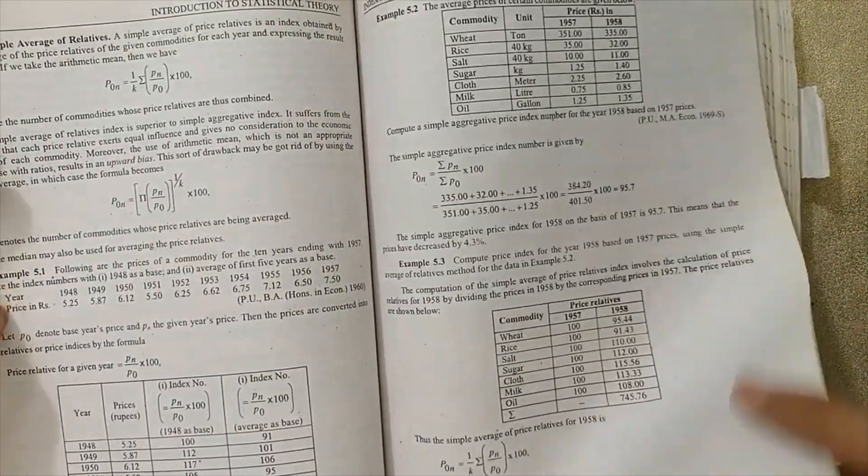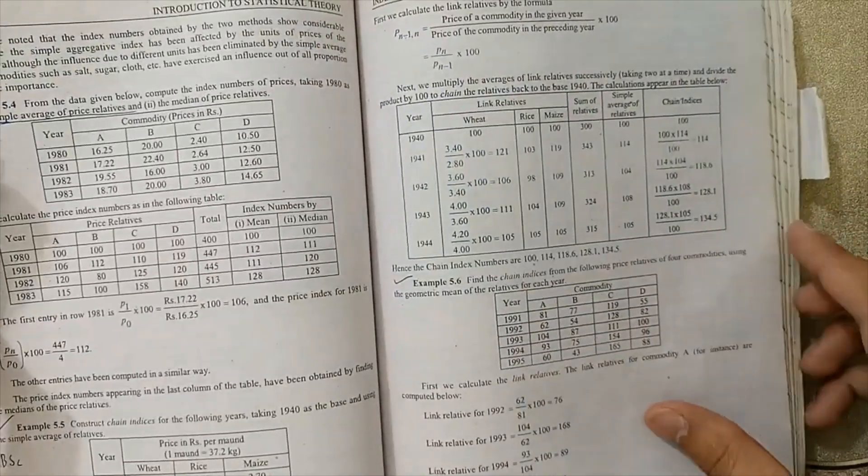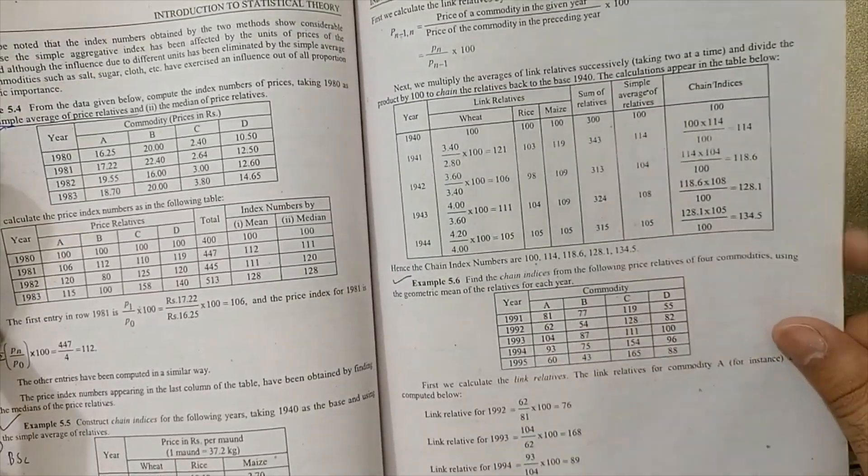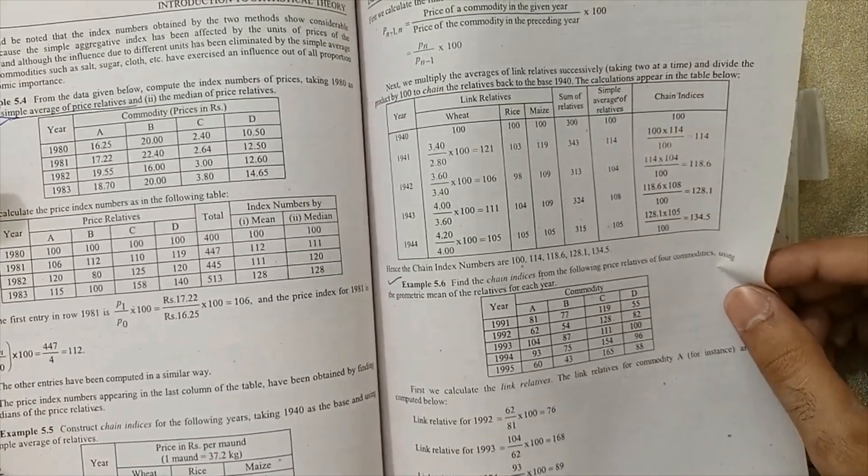And their numericals are very, very important. Next step is page number 138, Example 5.4 is very, very important for your exam. Example 5.5 very, very important for BSc 36 exam next.